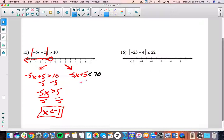Over here, subtract 5 to undo adding 5. Divide by negative 5. Oh, divide by negative. We get x is greater than 3.